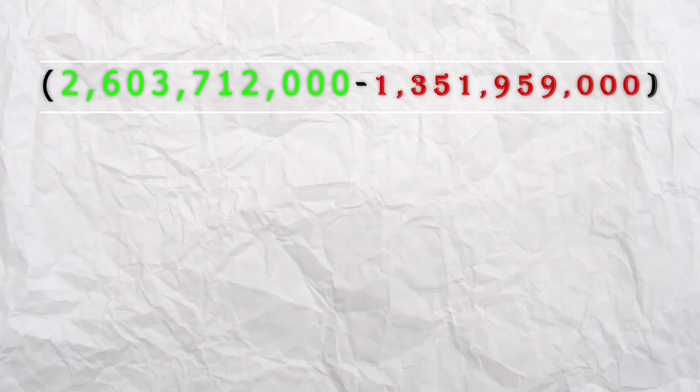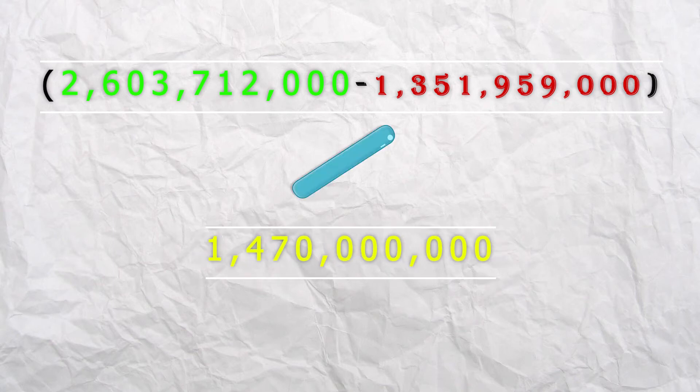Now when we have all the information we need to make the calculation, we can easily find out what the current assets per share is. We have total assets of 2.6 billion, minus 1.35 billion in total liabilities, divided by total shares outstanding of 1.47 billion shares, which equals 0.851 assets per share.